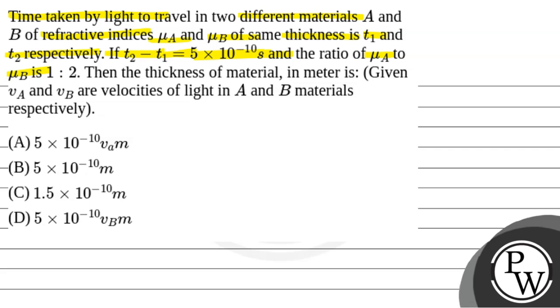Then the thickness of material in meters is question. VA and VB are velocities of light in A and B materials respectively.